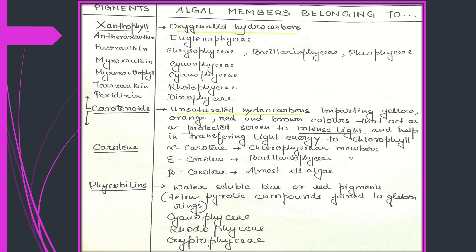There are normally six types of naturally occurring carotene: alpha, beta, gamma, epsilon, flavicin, and lycopene. Among them, alpha-carotene is found in Chlorophyceae members, epsilon-carotene is found in Bacillariophyceae members, and beta-carotene is found in almost all algal members.